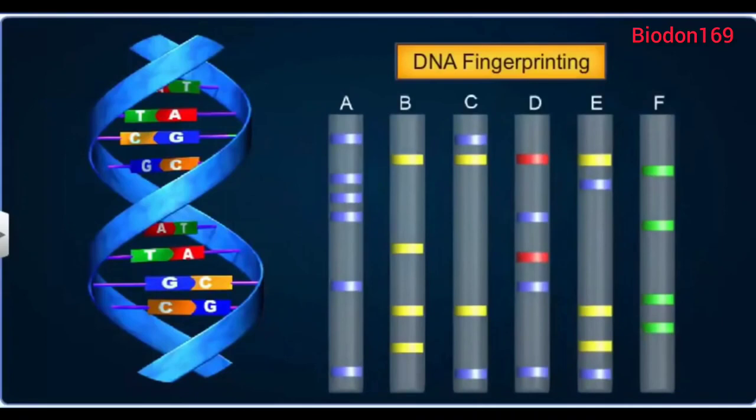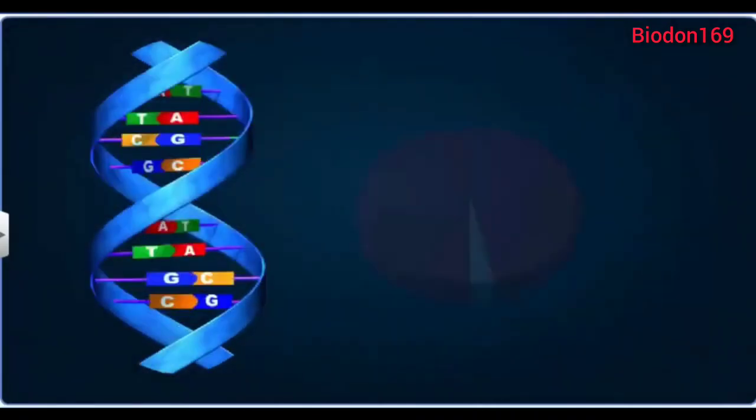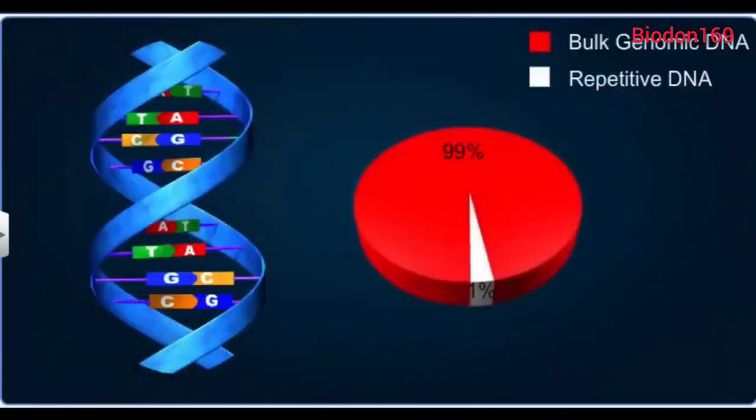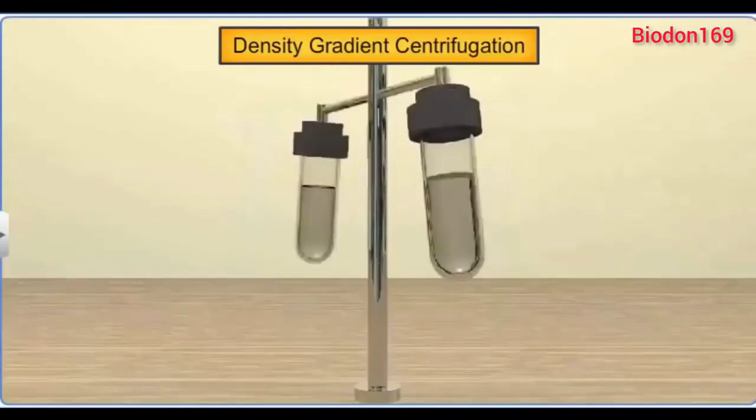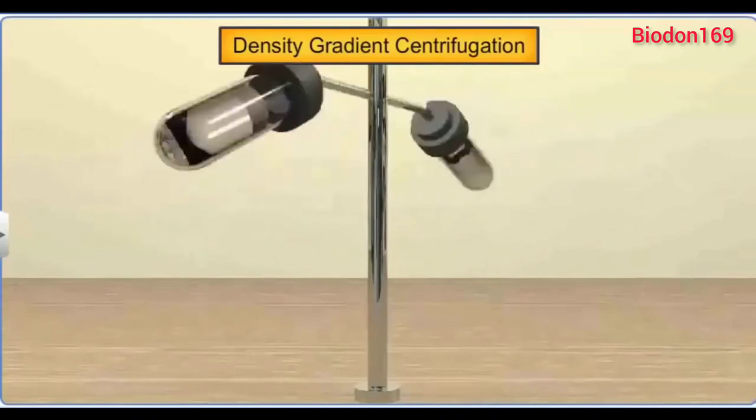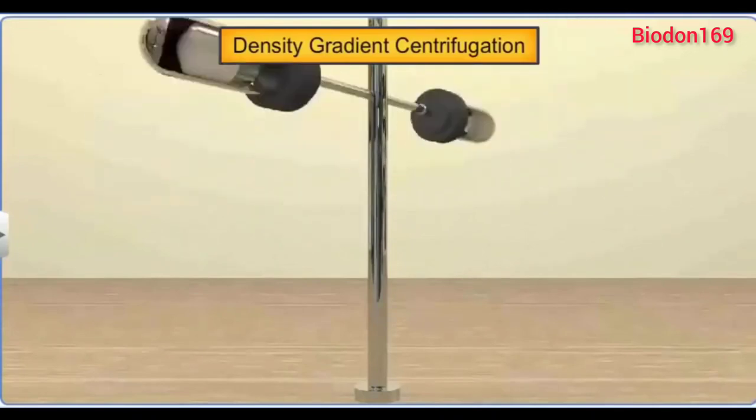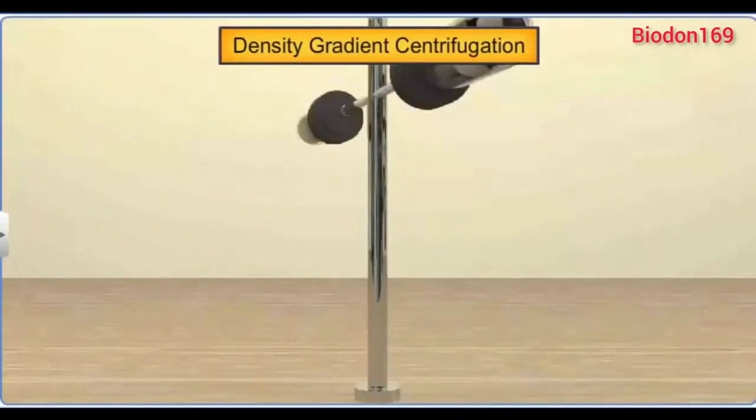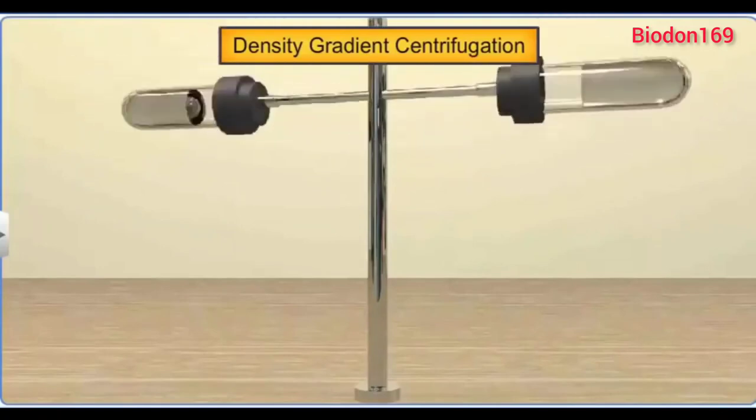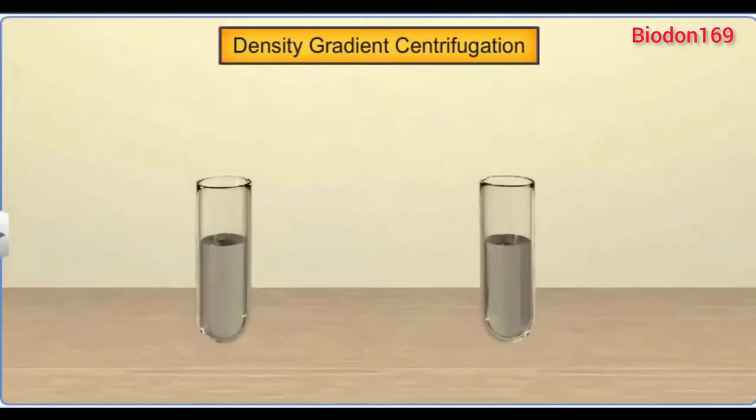To separate both genomic as well as repetitive DNA, the process of density gradient centrifugation is carried out. As satellite DNA is lighter and bulk DNA is heavier, they get separated on the basis of their density.